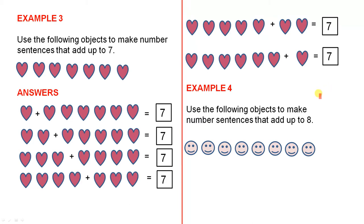Example 4, use the following objects to make number sentences that add up to 8. So here we have 1, 2, 3, 4, 5, 6, 7, 8, so we've got 8 objects in the form of smiley faces, and they will follow the process that we did in the first three examples, and you might lead them through the first two and I'm sure they can do the others.